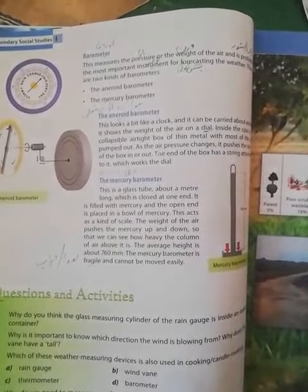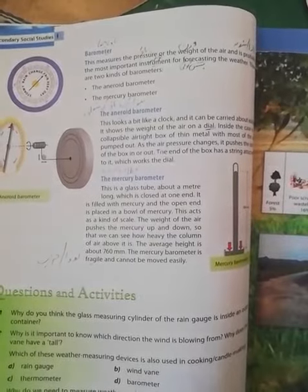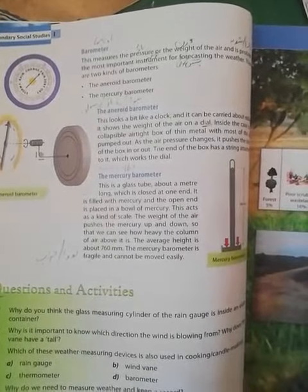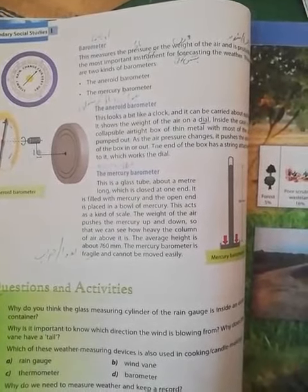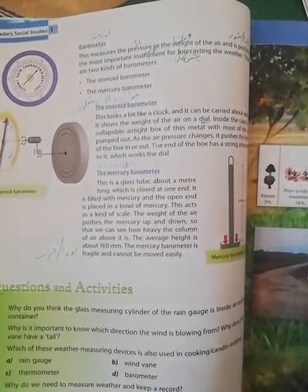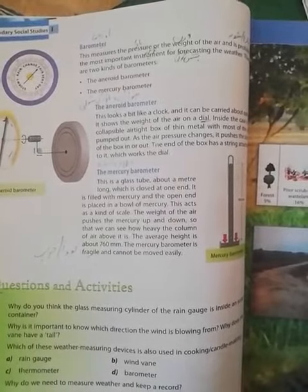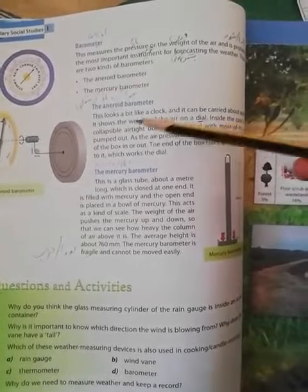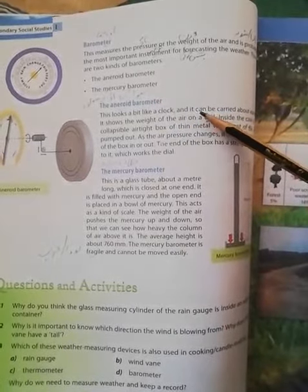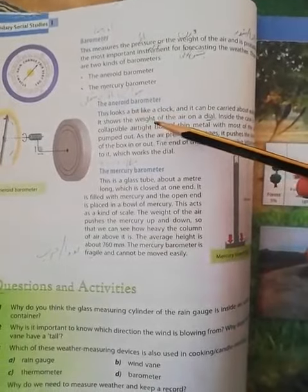The two kinds are the aneroid barometer and the mercury barometer. The aneroid barometer looks a bit like a clock and it can be carried about easily. It shows the weight of the air on a dial.